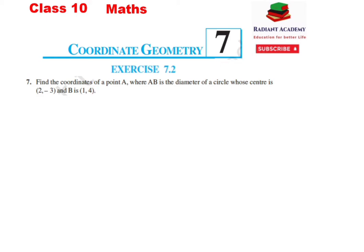Hamare jo hai ek circle ko prepare karna hoga, circle par AB diameter ko prepare karna hoga, jahan par B point ke coordinates diye gaye hain. Aur diameter jo hai, center se pass hoga, toh center point ke coordinates diye gaye hain. Hamare jo hai A point ke coordinates ko determine karna hai.